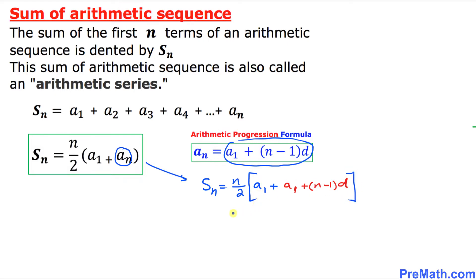Let's simplify this thing. That is going to be n over 2 times, see this a1 and a1 these are same thing so I'm going to put it together. This becomes 2a sub 1 plus n minus 1 times d.